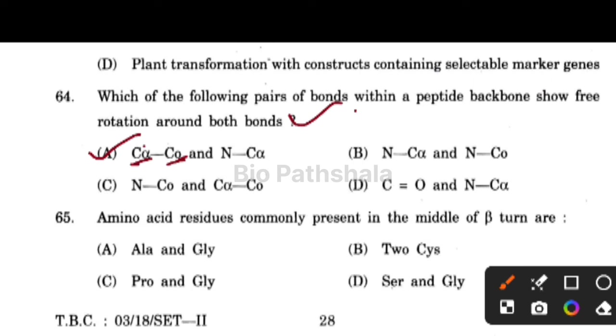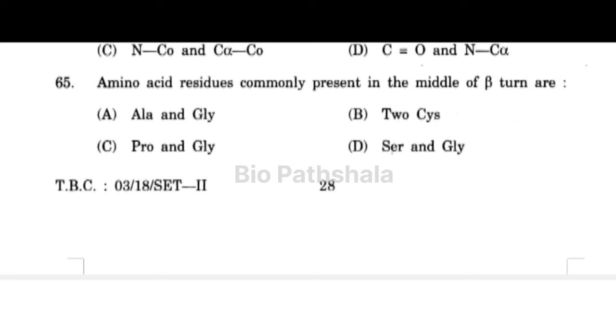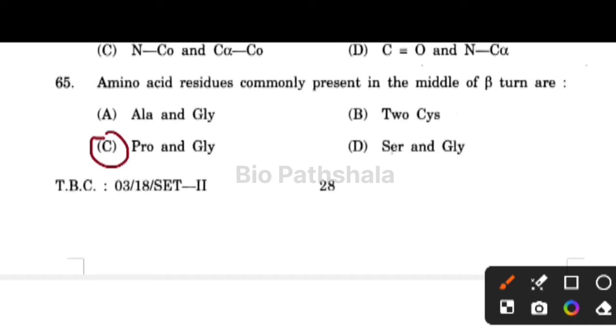Next question: amino acid residues commonly present in the middle of a beta turn are option number C — proline and glycine.